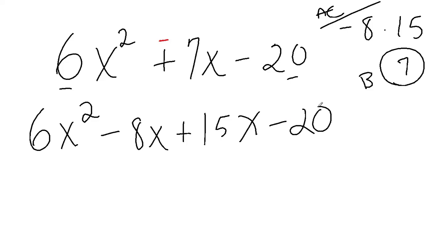So I checked for my GCF. No GCF. I multiplied A times C, got negative 120. I listed all those factors. Once I found the pair, I've got to split this apart into the two factors that we found.